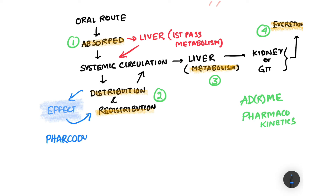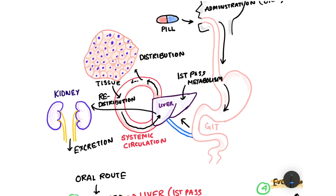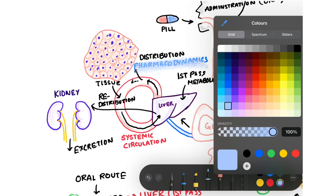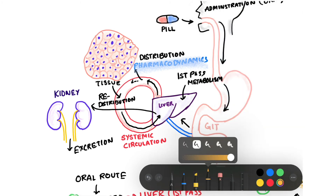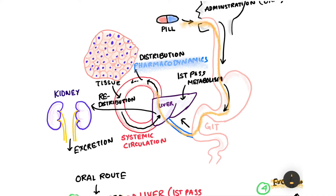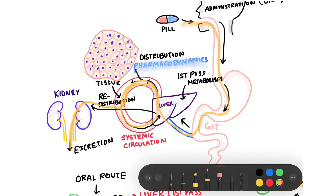Where the drug performs a certain effect on the human body — that is pharmacodynamics. In the diagram, pharmacodynamics occurs at the tissue level where the drug acts. Pharmacokinetics covers the entire process of drug delivery: from absorption, through liver circulation, distribution, and finally excretion via the kidneys. The entire drug delivery process constitutes pharmacokinetics.